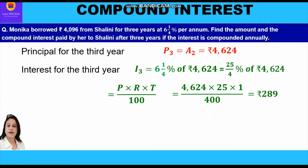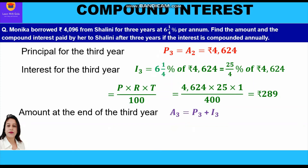Rupees 289 is the interest for the third year. Now we shall find the amount at the end of the third year, which is the sum of the principal of the third year and the interest of the third year. So we add 4624 and 289 to get the amount at the end of the third year, which is rupees 4913.